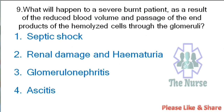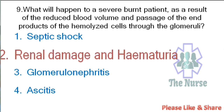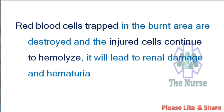Next question: What will happen to a severe burn patient as a result of reduced blood volume and passage of end products of hemolyzed cells through the glomeruli? — septic shock; renal damage and hematuria; glomerulonephritis; ascites. Correct answer: renal damage and hematuria. Red blood cells trapped in the burnt area are destroyed and the injured cells continue to hemolyze, leading to renal damage and hematuria.